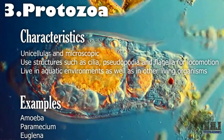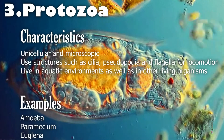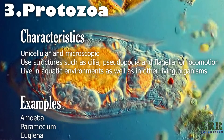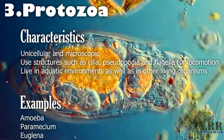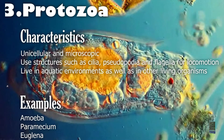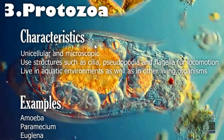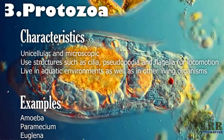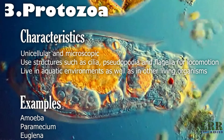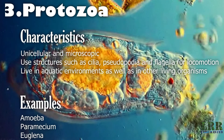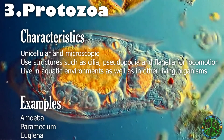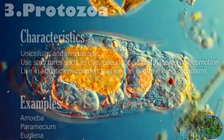Number three: protozoa. Characteristics of protozoa are unicellular and microscopic. They use structures such as cilia, pseudopodia, and flagella for movement. They are found in aquatic environments as well as in other living organisms. Examples for protozoa are amoeba, paramecium, and Euglena.